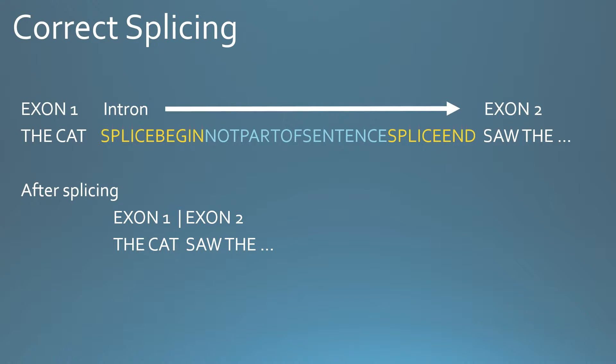After splicing removes all the parts highlighted in yellow and blue, it produces the final sentence: 'the cat saw the...' etc.